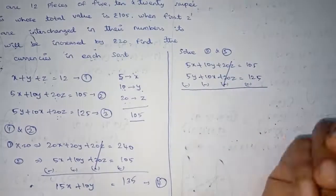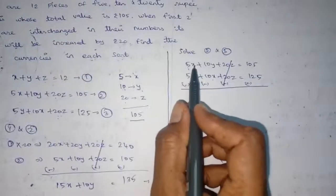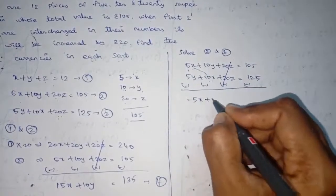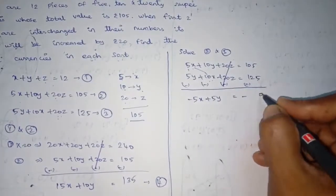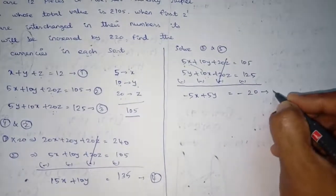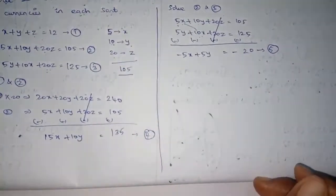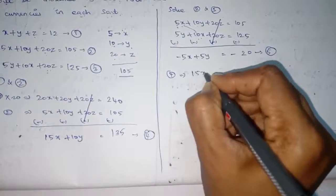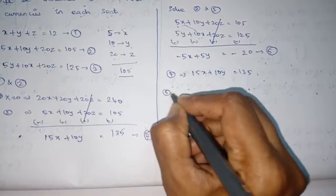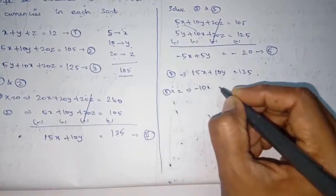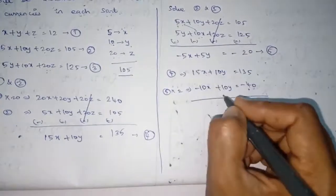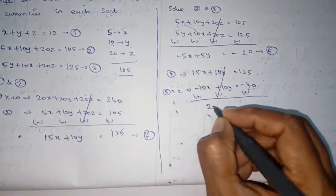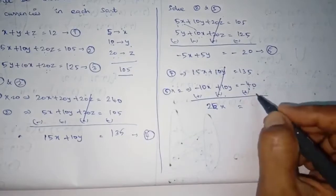Here the X term: 5X minus 10X gives minus 5X, and 10Y minus 5Y gives plus 5Y, equal to minus 20. This is equation 5. Now solving equations 4 and 5: equation 4 is 15X plus 10Y equals 135. We multiply equation 5 by 2: minus 10X plus 10Y equals minus 40. Changing sign and adding: 15X plus 10X gives 25X equals 135 plus 40.